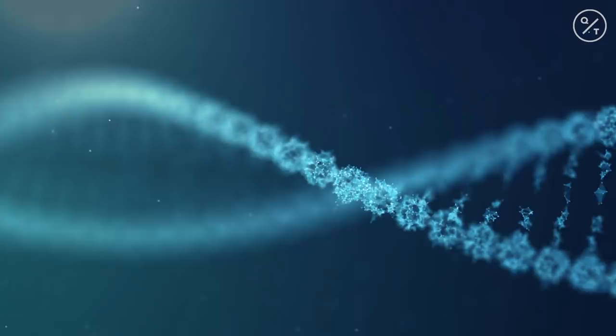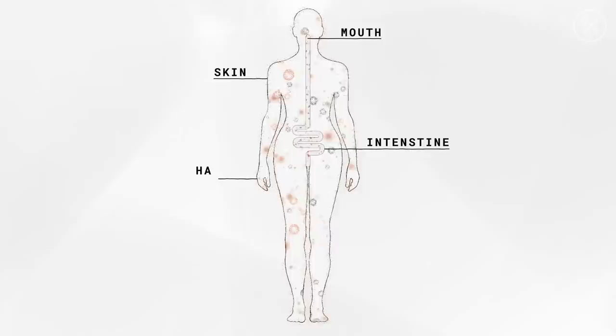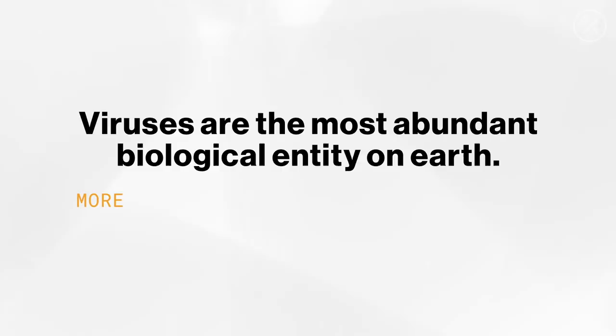Hundreds of thousands of unknown viruses probably are covering our bodies — in our intestine, on our skin, in our mouth, and everywhere else. In fact, viruses are the most abundant biological entity on earth, more than all other organisms combined.